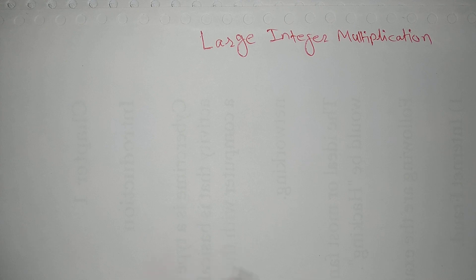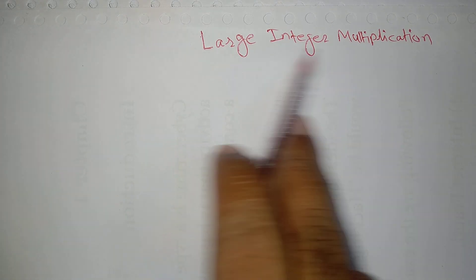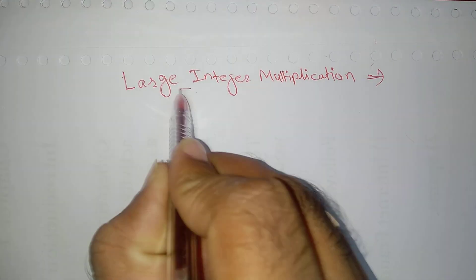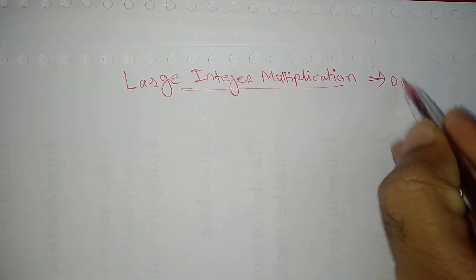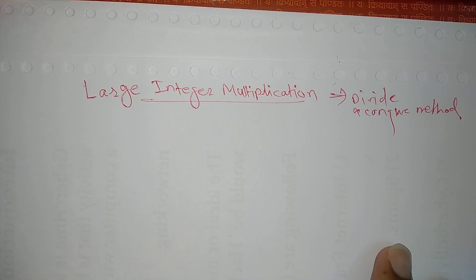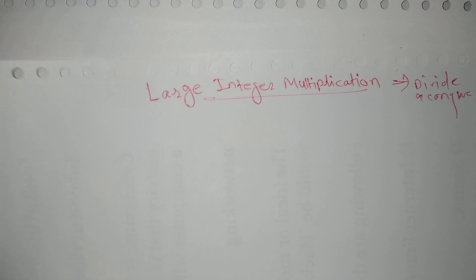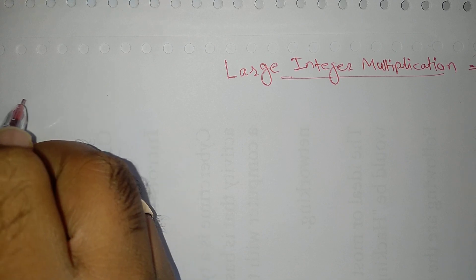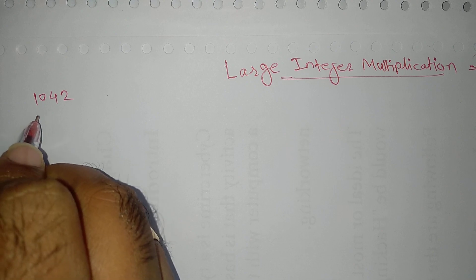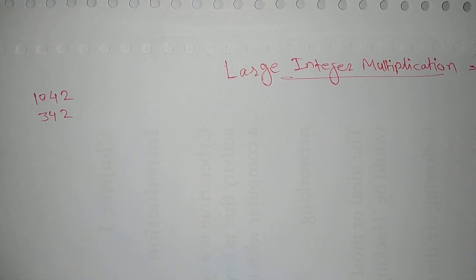Hello, in this lecture we are going to learn larger integer multiplication. Larger multiplication is a concept which we are going to see under the divide and conquer method. This is an approach which we use to solve larger integers. Let's consider the values 1042 and 342 — we will try to understand.